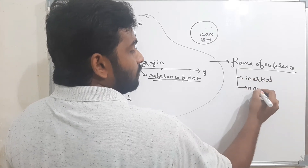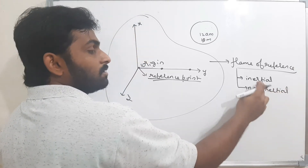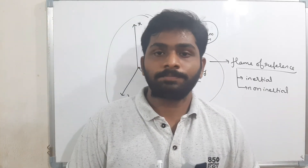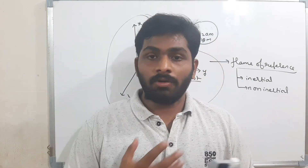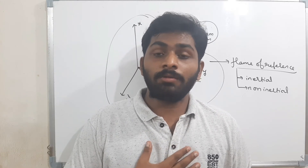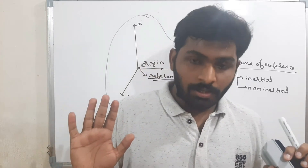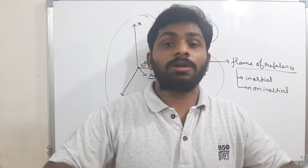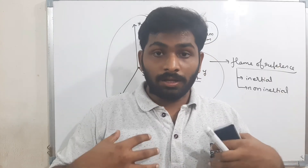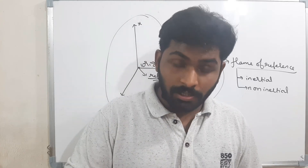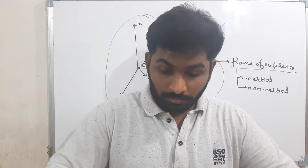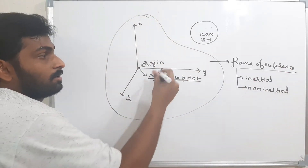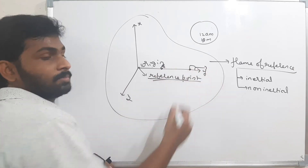Within a frame of reference there are two types: inertial and non-inertial. We will study these deeply during Newton's laws of motion, but briefly: I am standing still and a car is moving in front of me. I am the observer. I am at rest. The place where I am standing I assume as an inertial frame of reference. That means the observer must not move — the observer should be at rest with respect to the surroundings. That frame is an inertial frame of reference.